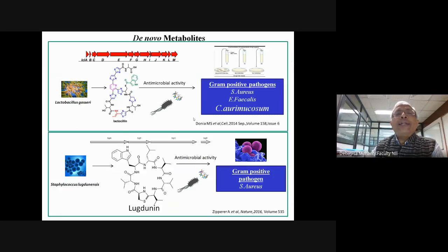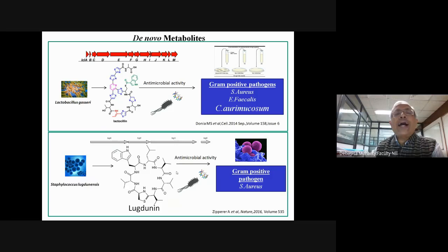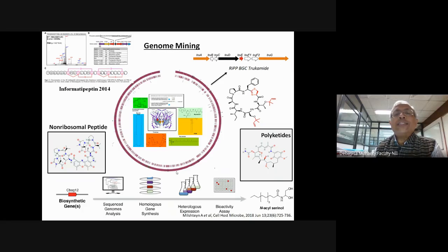There are other examples: an enzyme from E. lenta converts digoxin, a cardiac drug, to an inactive form — so if that microbiota is higher in a patient, the drug does not work. Another example is lactosiline from Lactobacillus gasseri, which inhibits the growth of pathogens like S. aureus. My talk will concentrate on how you can analyze microbial genomes computationally to predict which de novo metabolites are biosynthesized by the microbes.